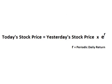Each day, the price of an asset such as a stock is the previous day's price times e raised to some value r. The r is the periodic rate of return — the rate that the asset increased or decreased that day.